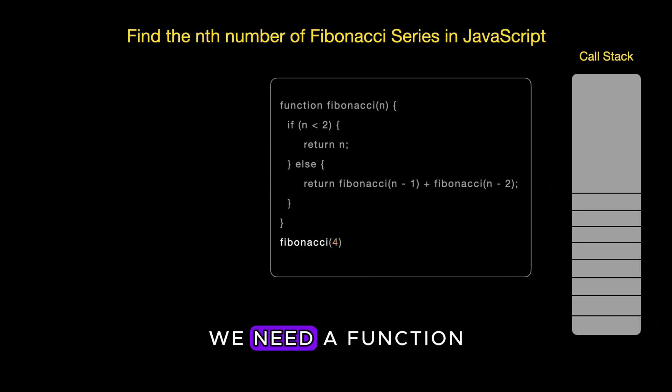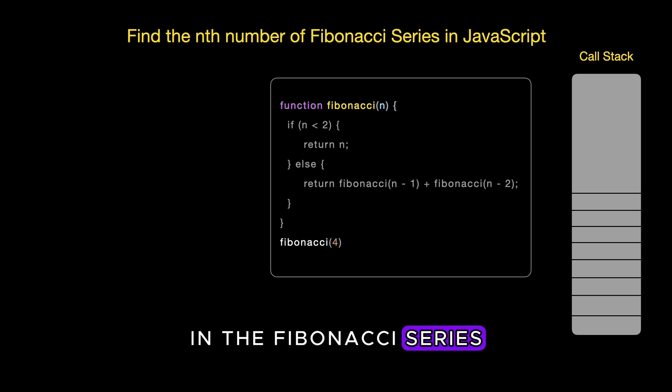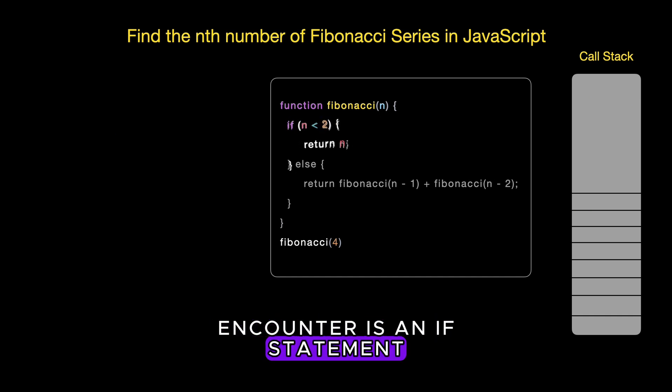First things first, we need a function to play with. We start with a function named Fibonacci that takes one parameter n. This function will calculate the nth number in the Fibonacci series. Inside our function, the first thing we encounter is an if statement. This is our base case. It checks if n is less than two.